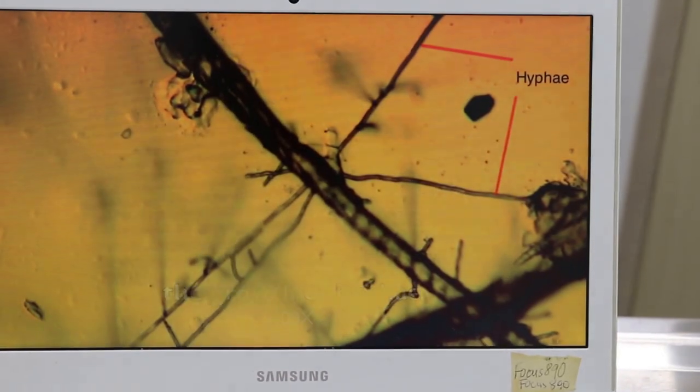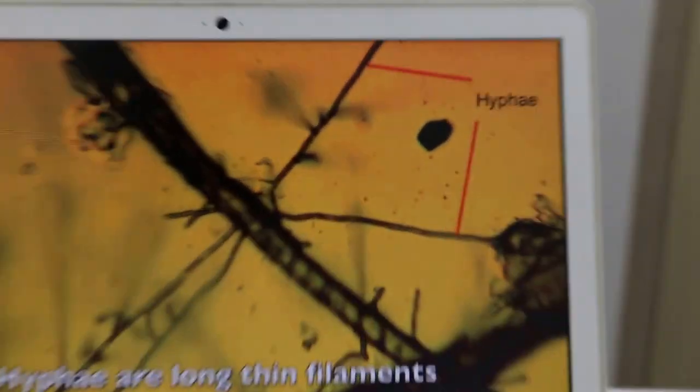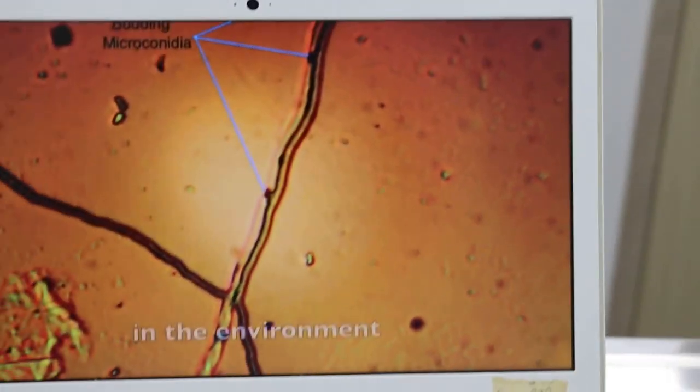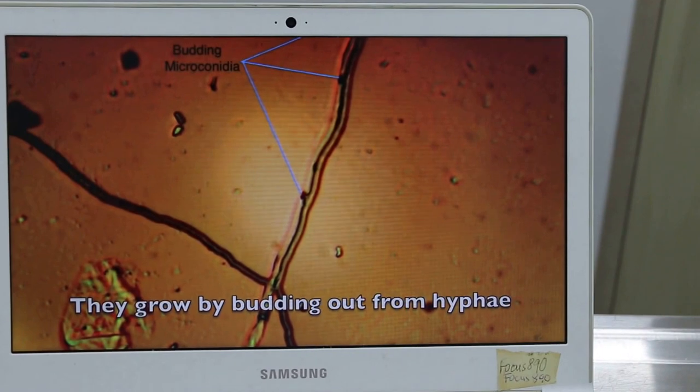They just become a microscopic hyphae. Hyphae are long thin filaments. They can be observed branching out and around hair shafts. Under the microscope you can see the spores from the environment, they grew by budding out from the hyphae.